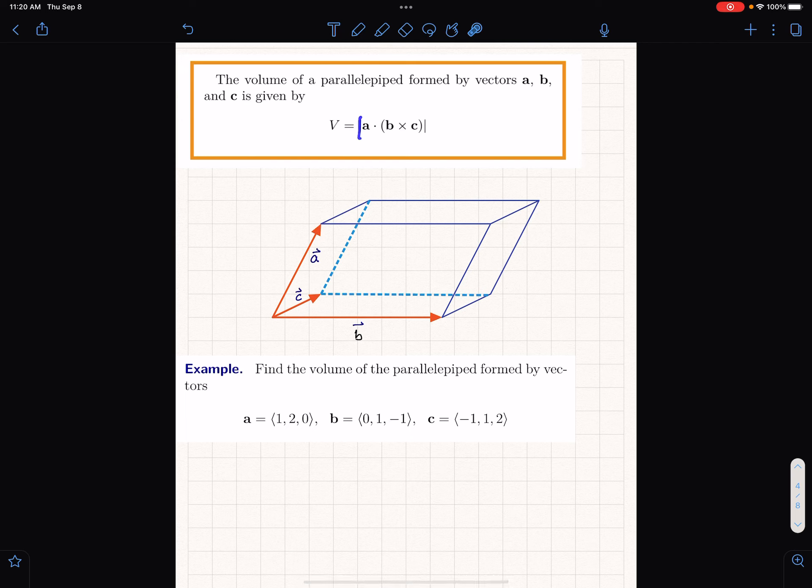It's the absolute value of the triple product. This is a triple product right here, and we'll talk about how we can evaluate that. A parallelepiped is a three-dimensional parallelogram and it is formed by these vectors a, b, and c.